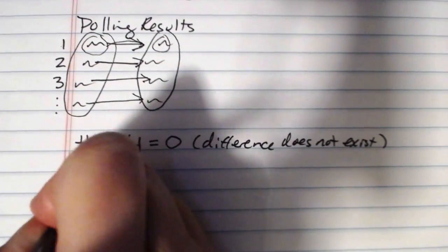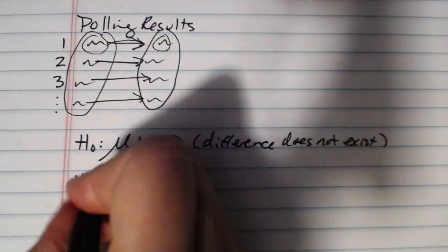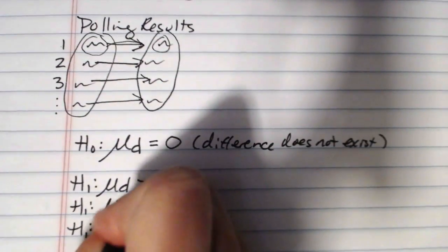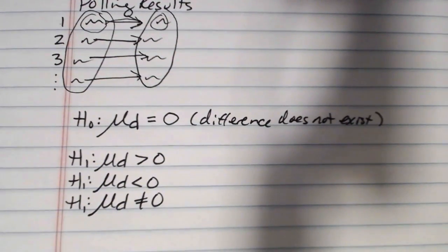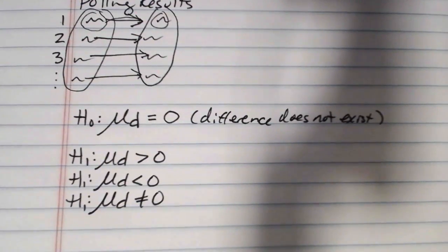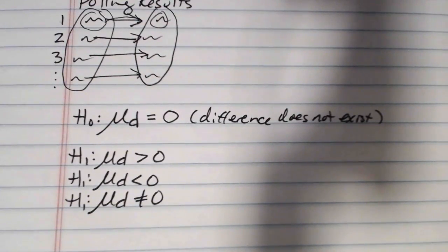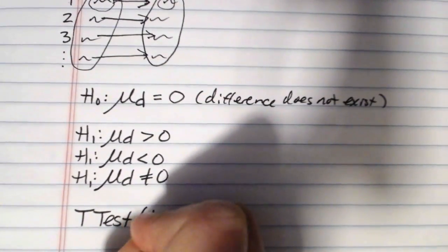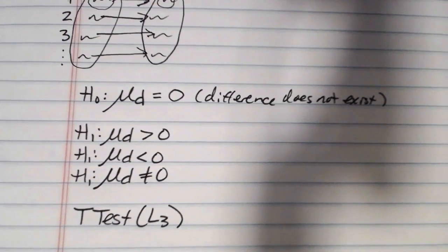That's going to be your null hypothesis for all of this type of hypothesis test. For your alternate hypotheses, you will have three choices, just like always, a greater than, a less than, and not equal to. So you could be looking for a mean difference that's greater than zero. You could be looking for a mean difference that's less than zero. Or you could be looking for a mean difference that's not equal to zero. Which one you use is just going to depend on the wording in the problem. Then the test that we're going to run is we're going to run a t-test, but we're going to run it on L3. We're actually going to have three lists of data when we do a problem like this, and it's the third list of data that we will be running the test on.